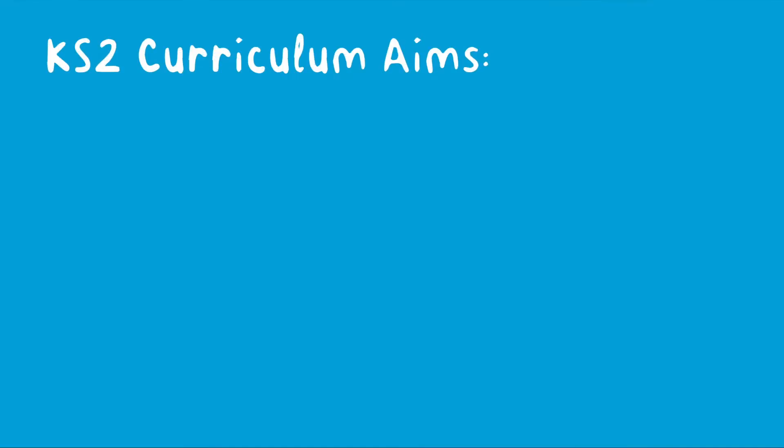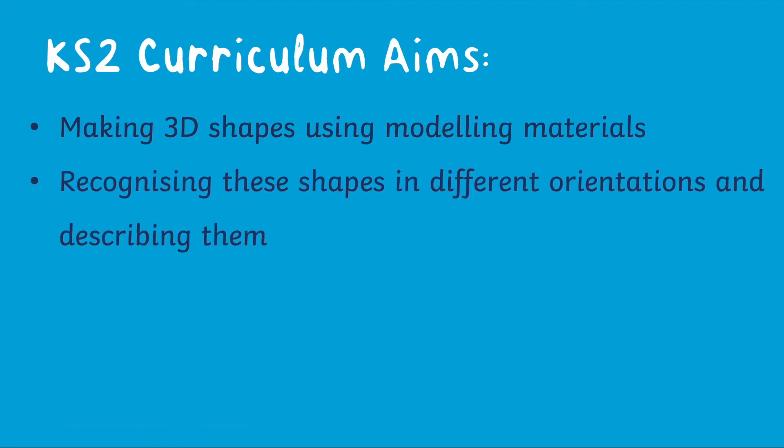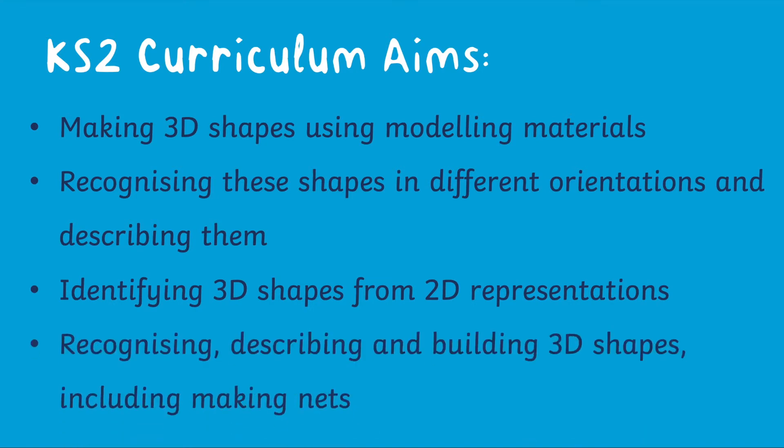In Key Stage 2, children will learn to solve more practical problems in geometry lessons. Some of the curriculum aims for this stage include making 3D shapes using modeling materials, recognizing these shapes in different orientations and describing them, identifying 3D shapes from 2D representations, and recognizing, describing, and building 3D shapes including making nets.